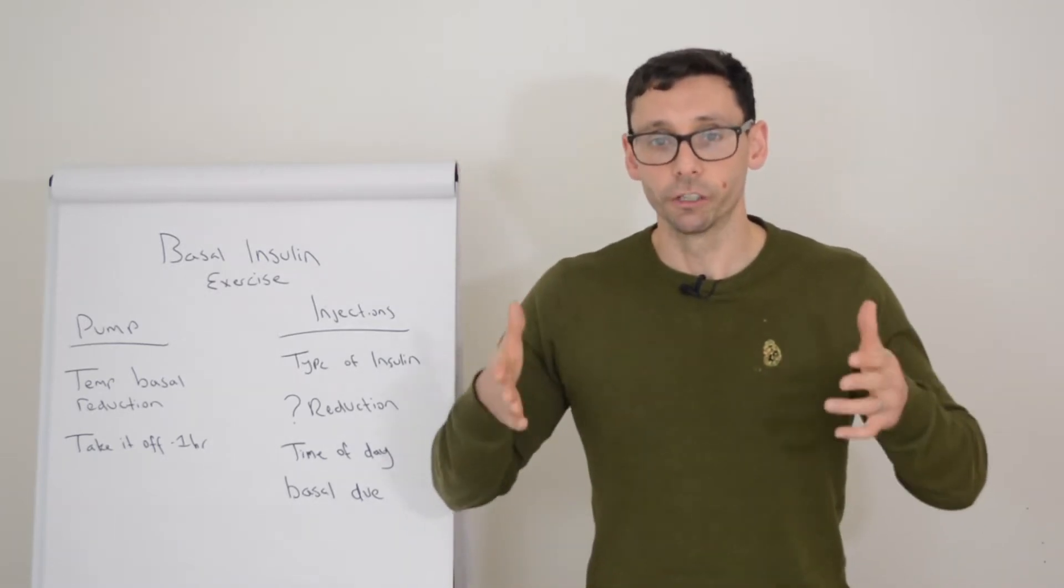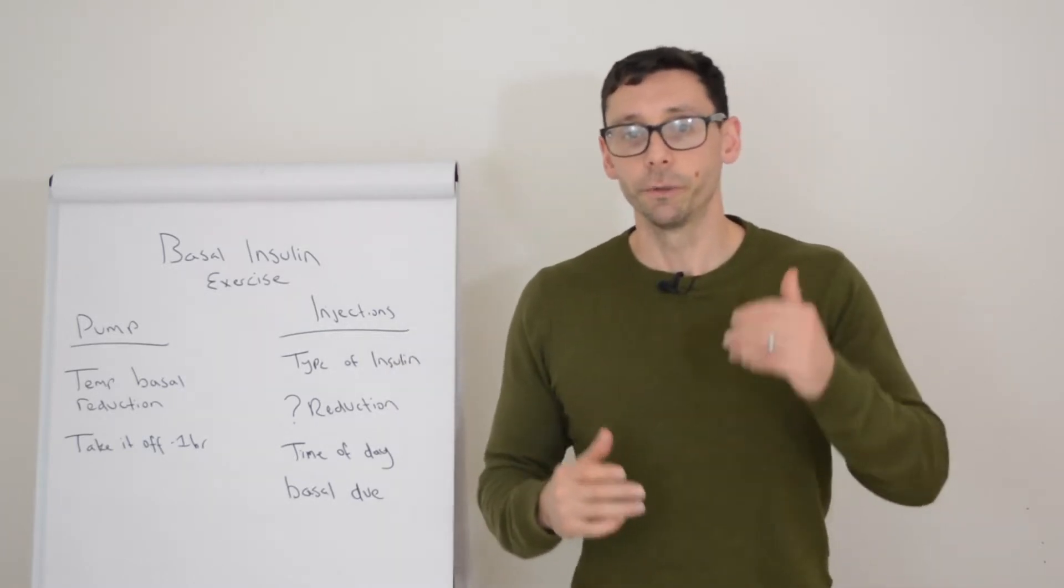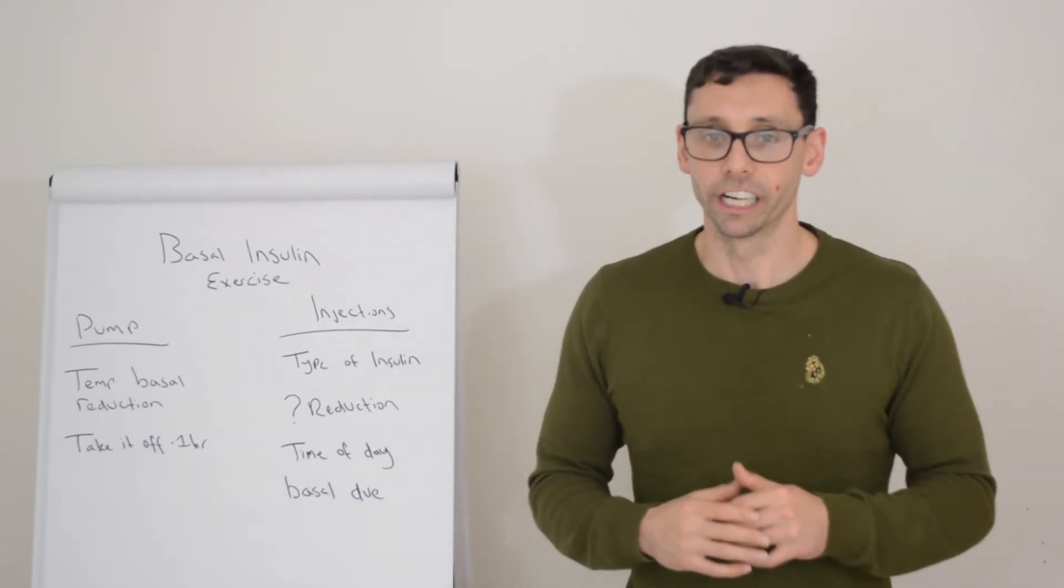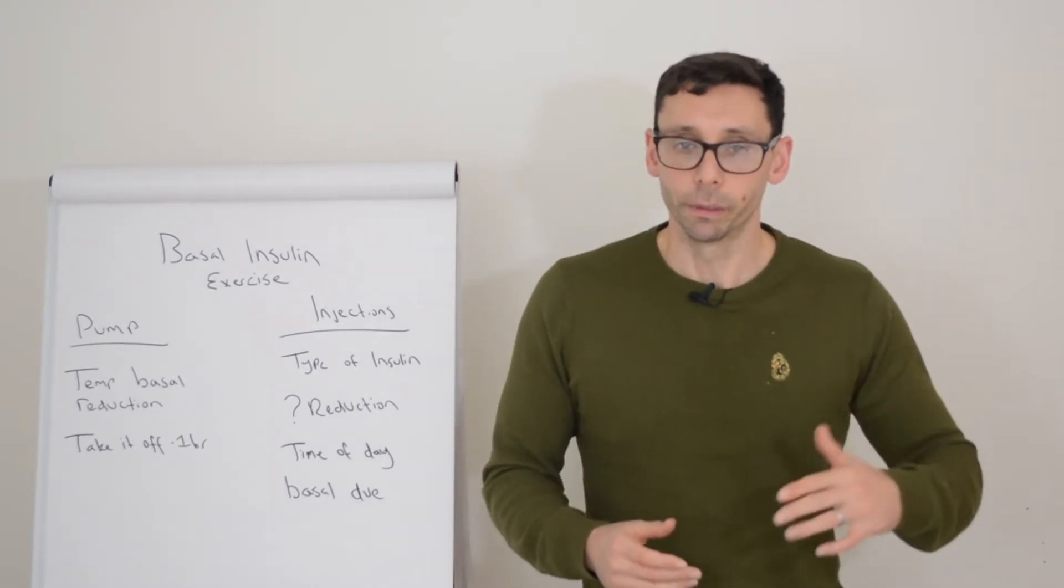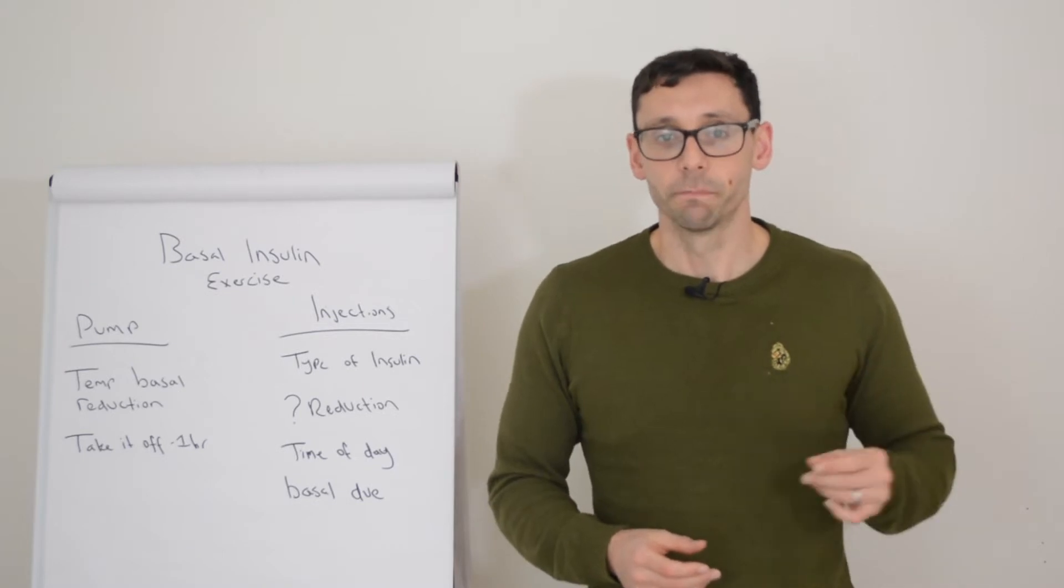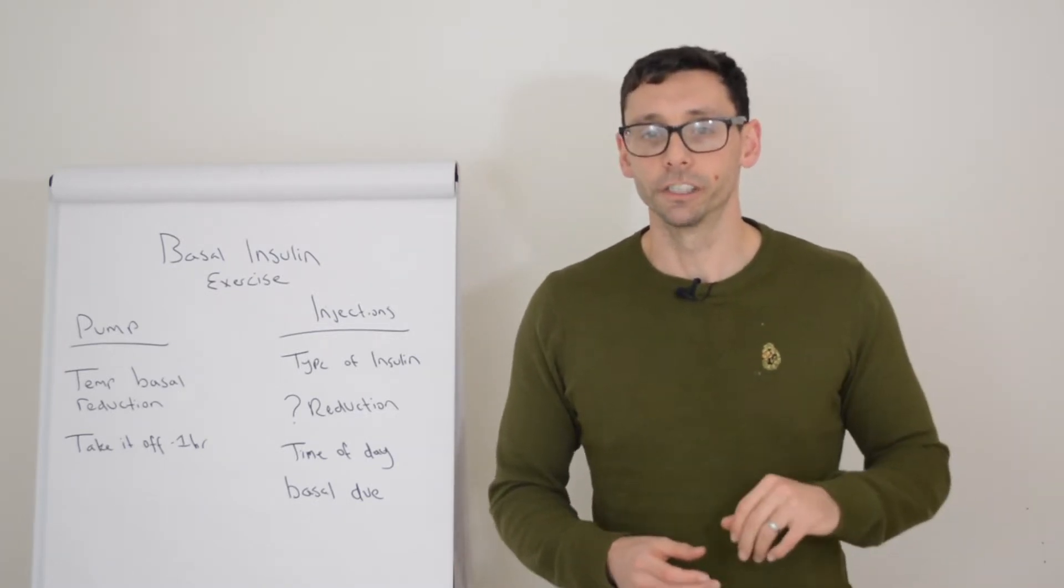So really with this we're trying to do our best to prevent hypos but also prevent particular highs, and we do have a reasonable bandwidth that we can try and aim for somewhere between 8 and 14 tends to be pretty good. And if you're dropping below that 8 you can always eat like we mentioned in the last video to just help prop up those glucose levels.